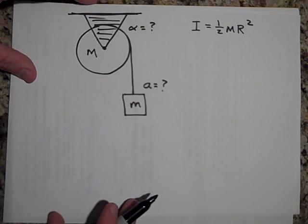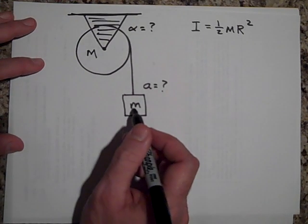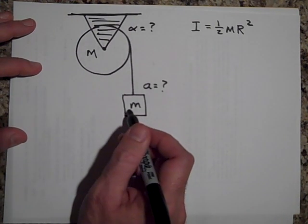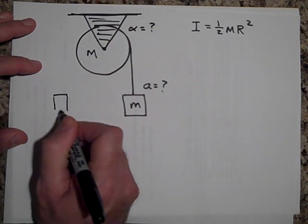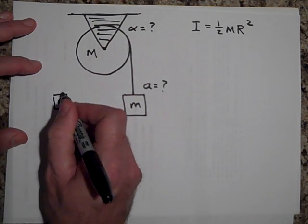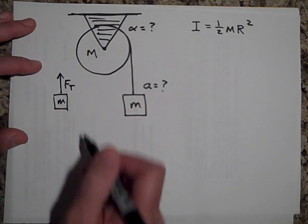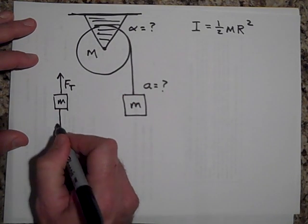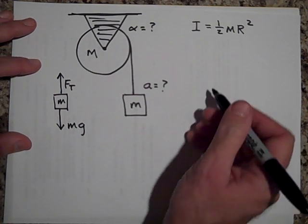All right, so let's see how you do this then. What you do is you draw two free body diagrams. So we're going to draw the bucket. It's got a tension FT on it and it's got an mg on it.